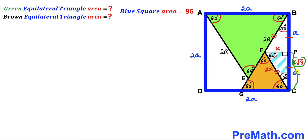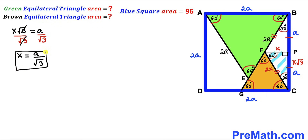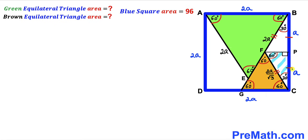Since CP = x√3 and CP = a, I can equate them: x√3 = a. Dividing both sides by √3, we get x = a/√3. Now focusing on side length FC, which equals 2x, and substituting x = a/√3, we get FC = 2a/√3. Thus the side length of the brown shaded equilateral triangle turns out to be 2a/√3.